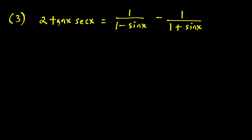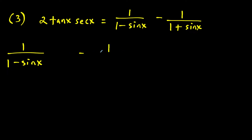For this next one, the left-hand side is definitely more simple than the right-hand side. So this time we're going to start with the right-hand side and show it equals the left-hand side. We're starting with one over (one minus sine x) minus one over (one plus sine x), and leaving a space because we want to combine these two fractions into one.